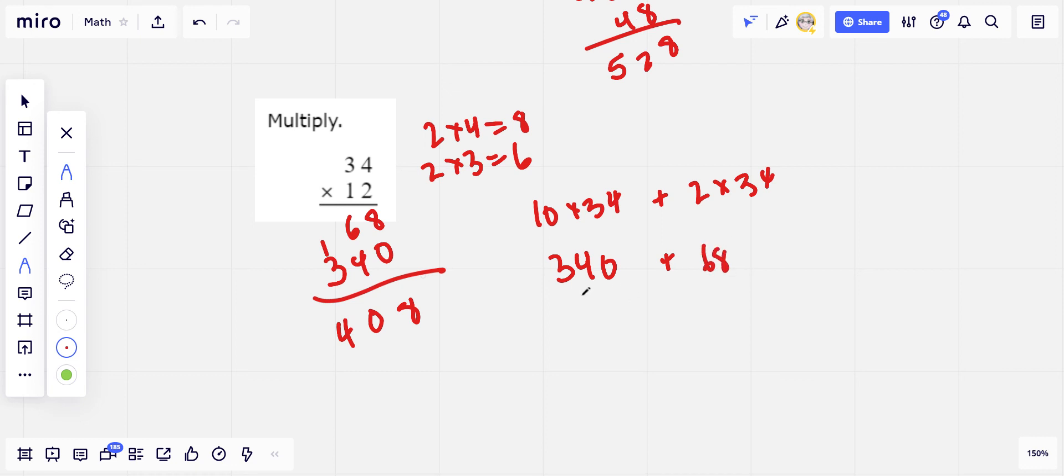And then we just get 340 plus 68. So that's 8, 10, boom, 408. So try whichever way works best for you. Maybe use both to check your answer. But that's how to work on these two-digit by two-digit multiplication problems.